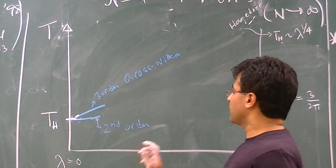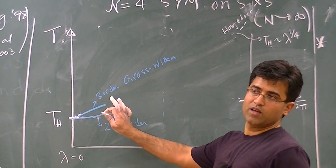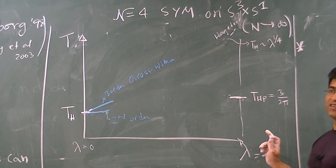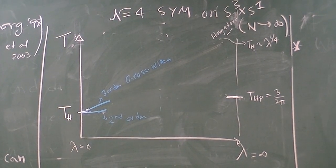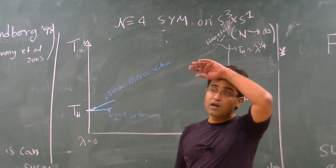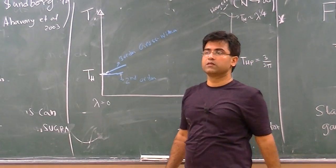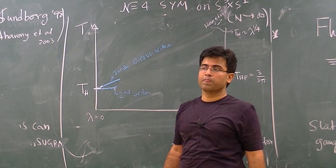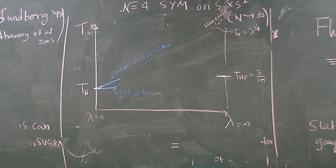If this possibility is realized, which just depends on a perturbative computation that nobody has had the desire to do, if this possibility is realized, it suggests that there is some intermediate value of the 't Hooft coupling that something interesting has to happen. Because we know that at infinite 't Hooft coupling there's only one phase transition. So it's possible that these two lines merge. I don't know. So, I mean, and then this Hawking-Page transition, this critical temperature.